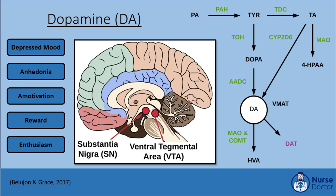The next monoamine, dopamine, is synthesized in the substantia nigra and ventral tegmental area in the midbrain. L-phenylalanine (PA), an amino acid from the diet, is converted into tyrosine (TYR) via phenylalanine hydroxylase (PAH). Tyrosine is converted into dihydroxyphenylalanine (DOPA) under the influence of tyrosine hydroxylase. DOPA is then converted into dopamine under the influence of L-amino acid decarboxylase (AADC). Dopamine is broken down by monoamine oxidase (MAO) and catechol-O-methyltransferase (COMT) into homovanillic acid (HVA). Reuptake can occur via the dopamine transporter (DAT).